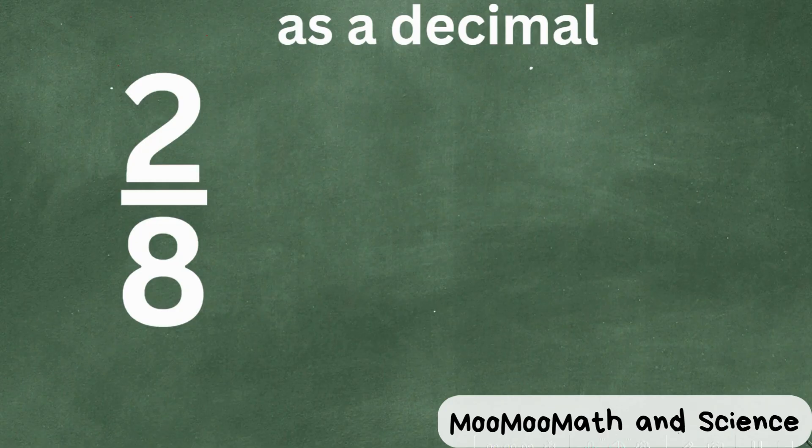What we need to do is we need to begin by dividing the numerator by the denominator. So let's get started doing that.